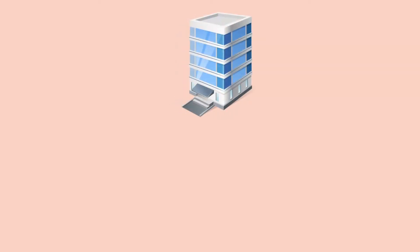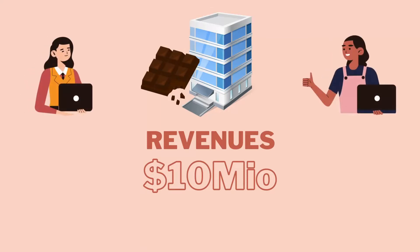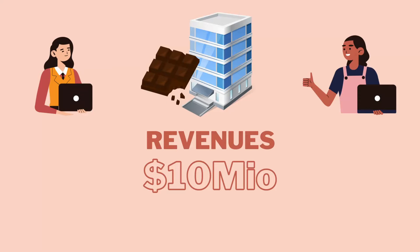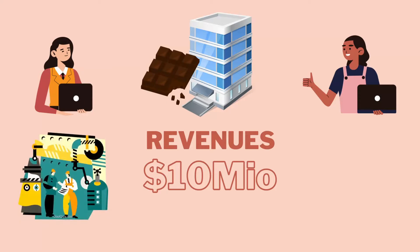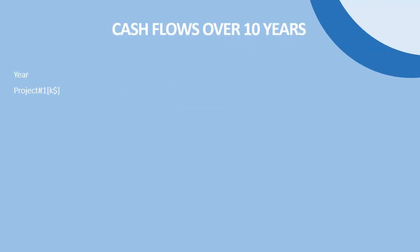Let's say your company produces 10 million dollars in revenues from dark chocolate each year, and you get two suggestions on the table from two managers. The first one is to automate the production line to produce more, while the second one is about introducing a new dark chocolate product with cannabis after legalizing it. So which decision would you take? Let's take a deeper look at the future cash flows that our managers have estimated over the next 10 years.